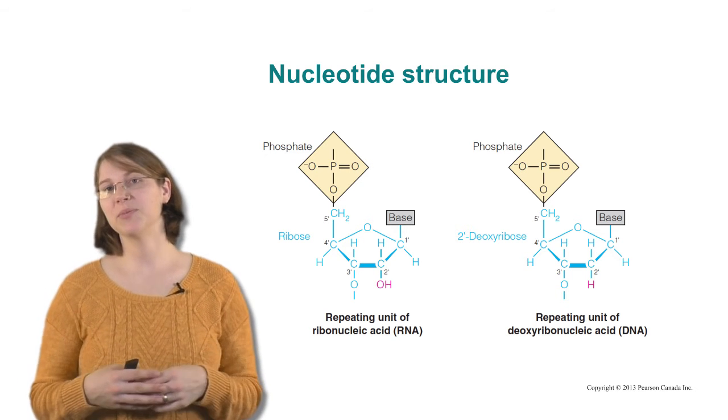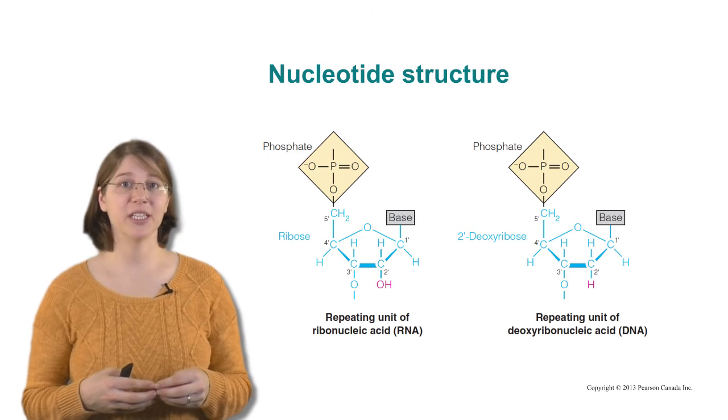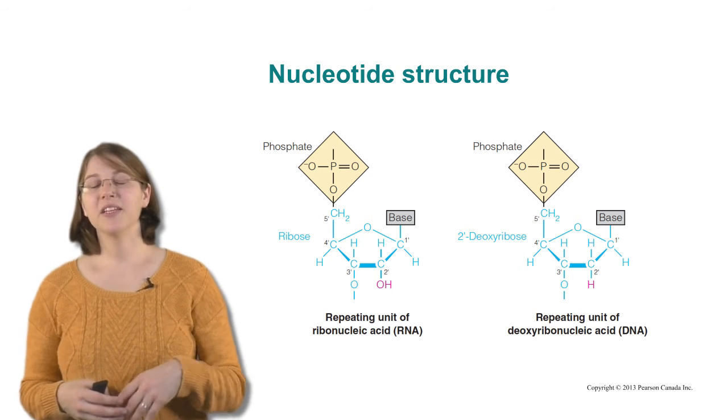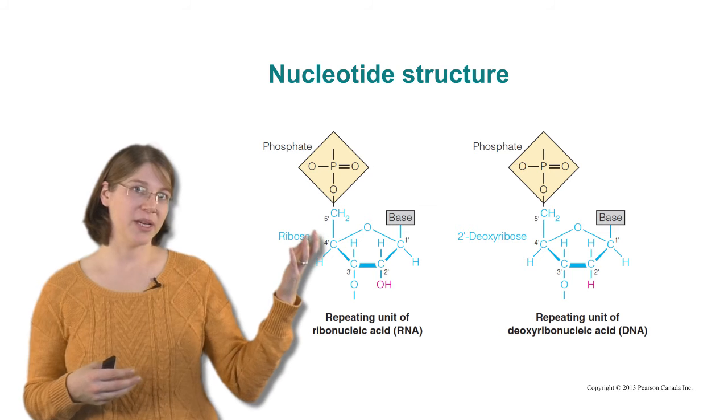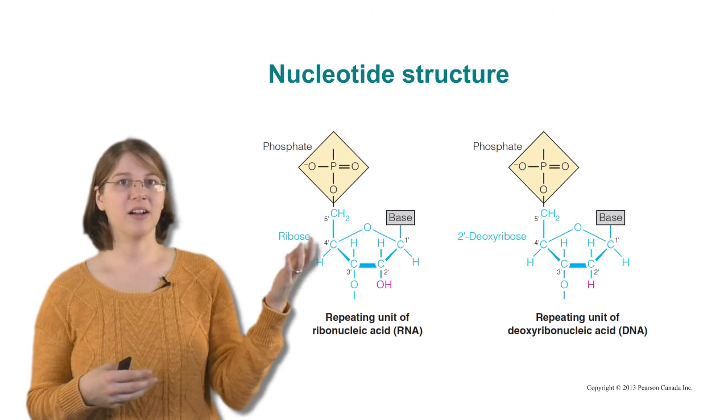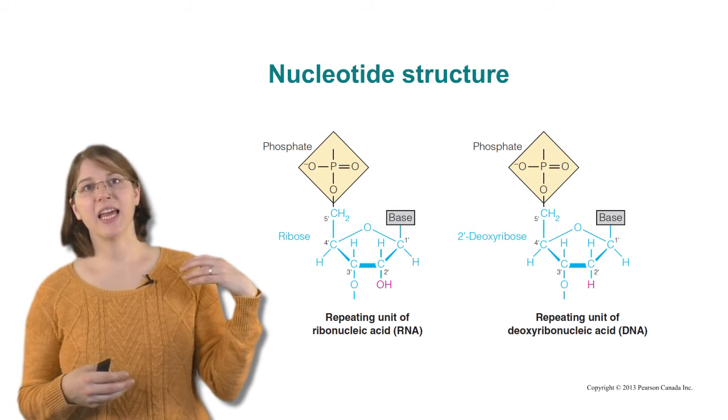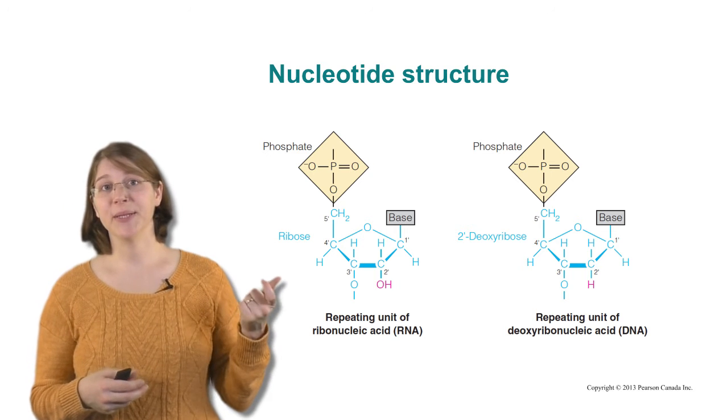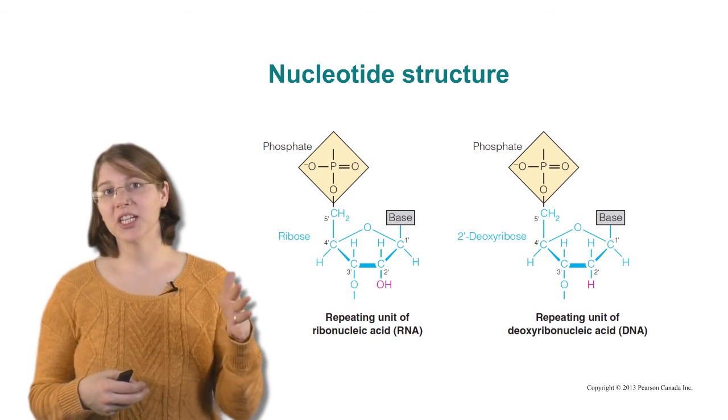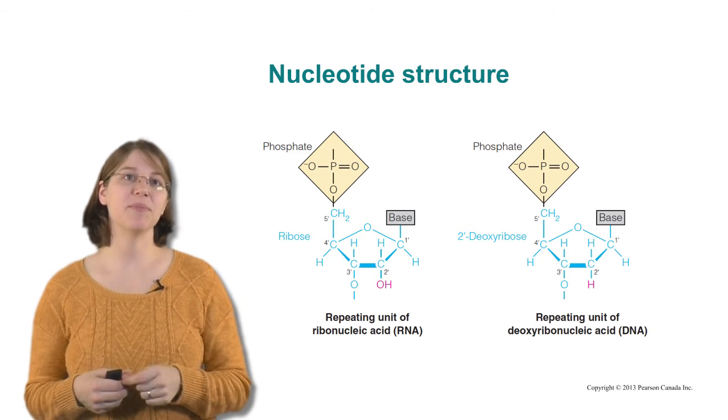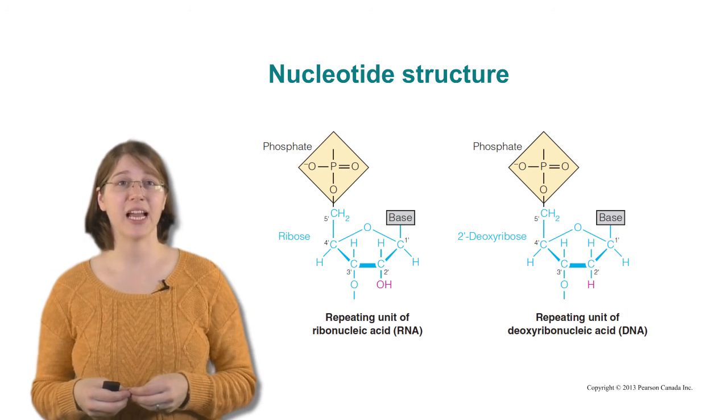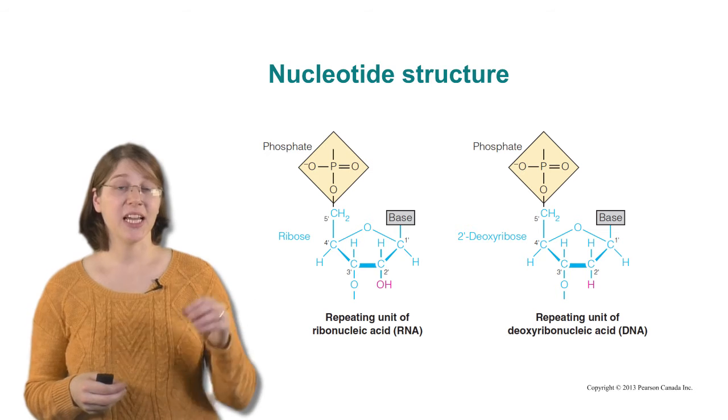And then you can see that the final carbon on our ribose has a phosphate group attached to it. And this phosphate-sugar pairing is going to be what makes up the backbone of our nucleic acid polymers.